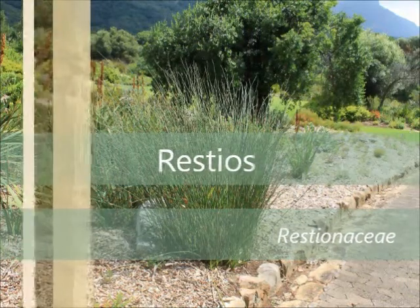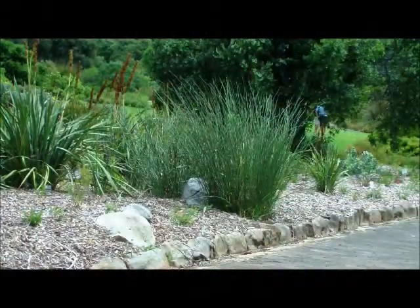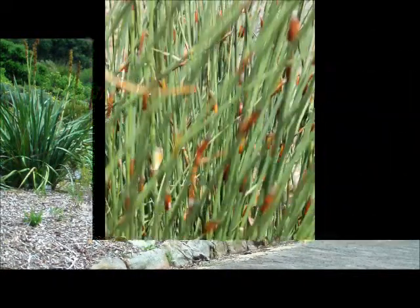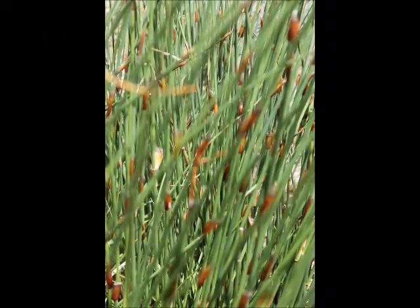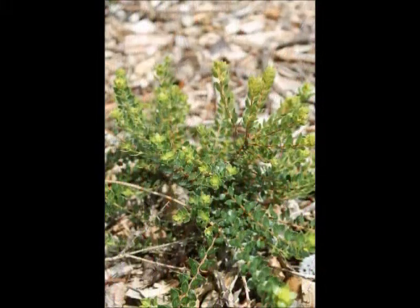Restios are large reed-like shrubs that are green-stemmed with brown flowers on the end. The brown-black rings you see on the stem are its leaves. Restios deal with transpiration by offering nearly no surface area of leaves to the sun.